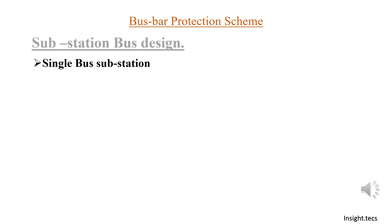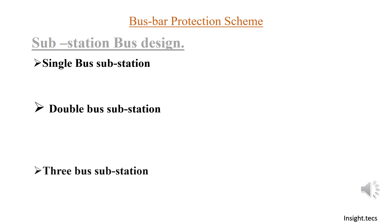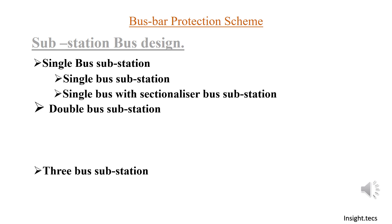Substation bus design can be single bus substation, double bus substation, and three bus substation. In a single bus substation we have an arrangement for only a single bus. For more convenience we also have a scheme with a sectionalized bus substation, which we have already seen in our previous video.